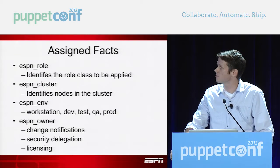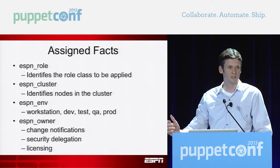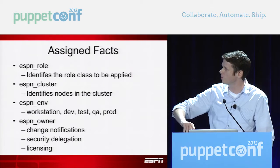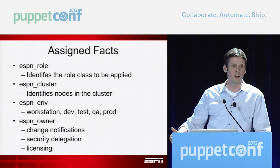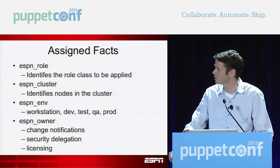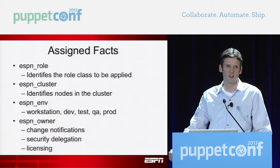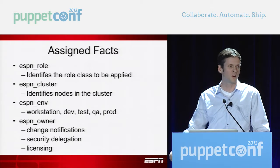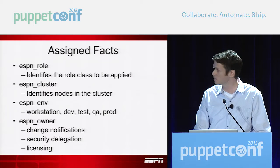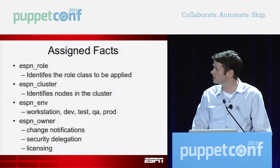Then we have assigned facts — these relate to our business roles. We want this server to be this, so we apply that information. It's not something we can just discover because things exist. All the data that drives our infrastructure will be one of these types of facts. The assigned facts we came up with are: role, cluster, environment, and owner. The owner fact is so we know who owns the box for change notifications, code deploys, security delegation, and licensing — if they want software they've got to pay for, we know who should pay for it.